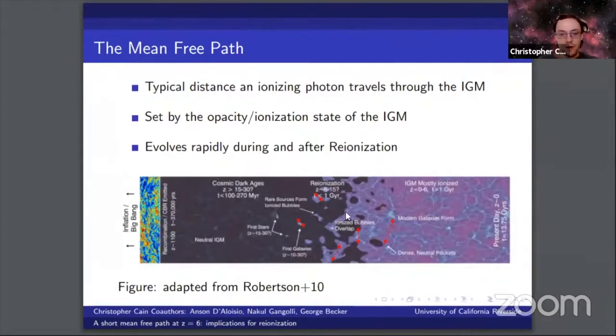In this figure, I've shown the red lines indicate possible paths that an ionizing photon could take during reionization. As you can see, the mean free path evolves very quickly during and after reionization. So direct measurements of the mean free path are a powerful probe of the reionization era.